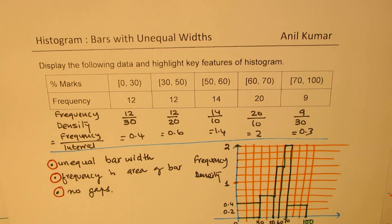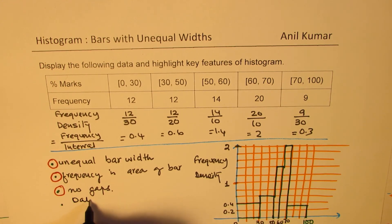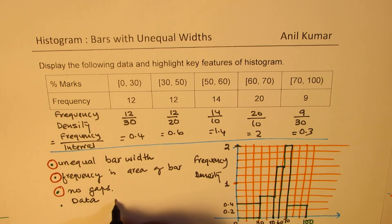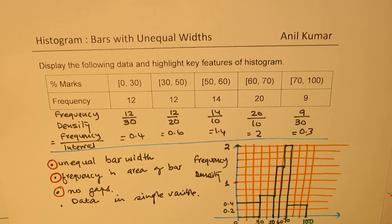Finally, a histogram represents data in a single variable. We are only talking about marks — not about apples and how many, or bananas and how many. We are saying marks of students: that is just one variable. You count the number of students and write them as frequency.